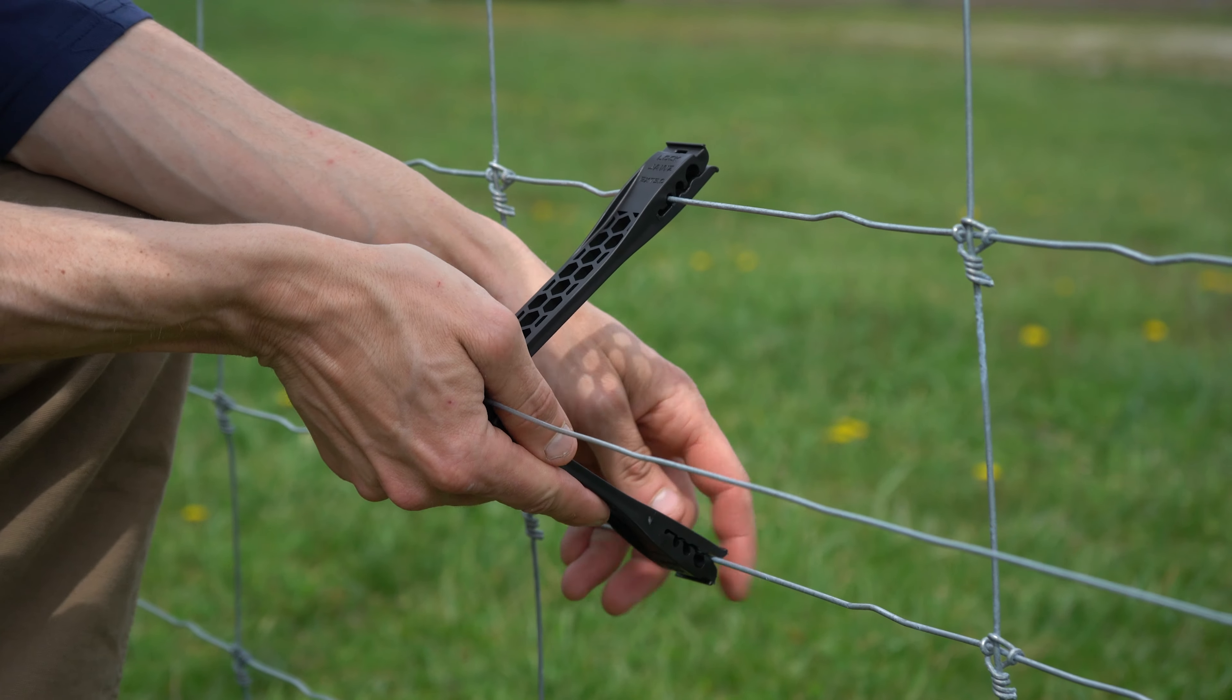These insulators work with smooth wire, high tensile wire, poly wire, electric rope, and up to half-inch electric tape.